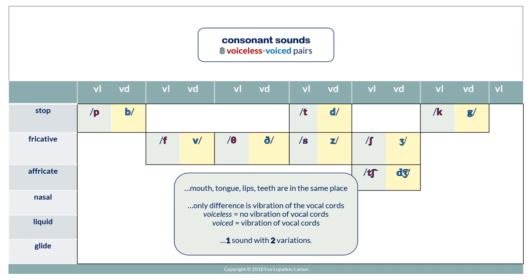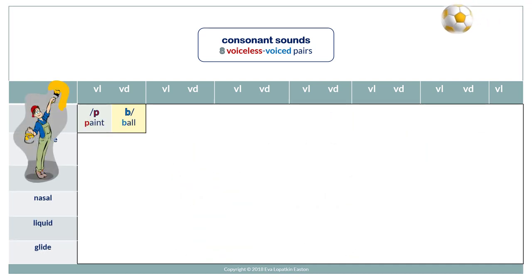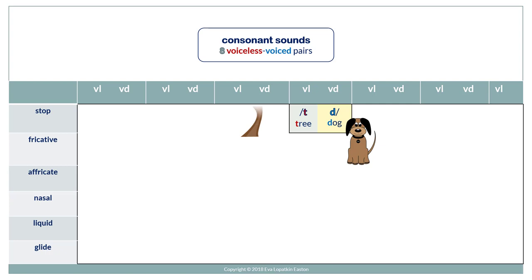Let's look at each of the sound pairs separately. P is voiceless. Vibrate the vocal cords and you get B — paint, ball. T and D — tree, dog.